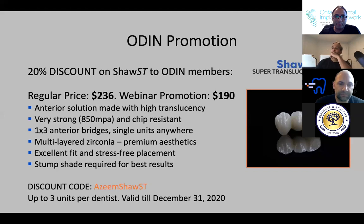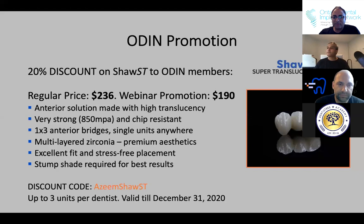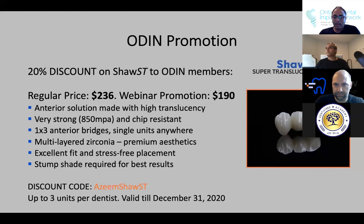Shaw has an amazing promotion for ODIN members — about a 20% discount on their Shaw Super Translucent crowns. They're normally about $236 but with the promo discount code for registered ODIN members — the code is AZIM_SHAW_ST (capital ST) — you can get up to three units. They're beautiful crowns; I've seen them and used them in my own practice. We really appreciate that Ali and Mike — you guys have been amazing support.